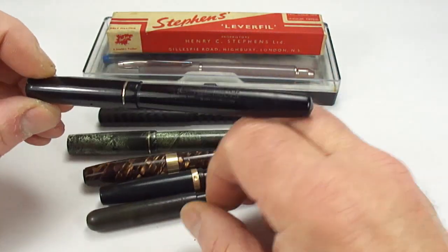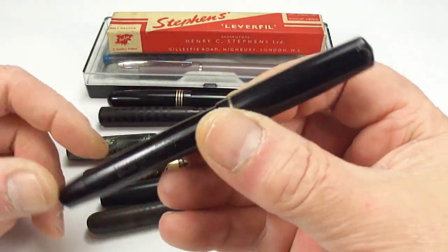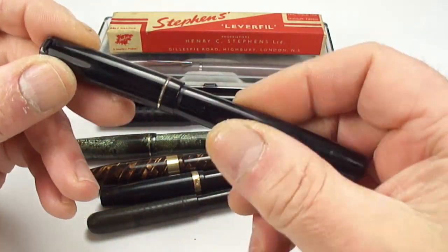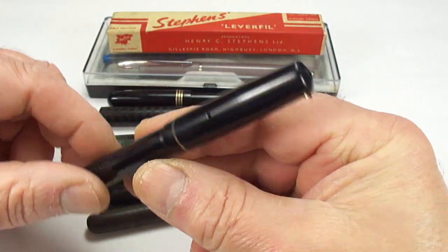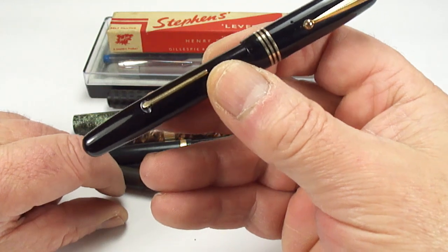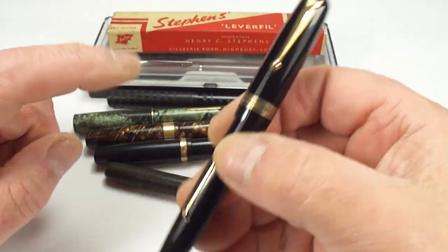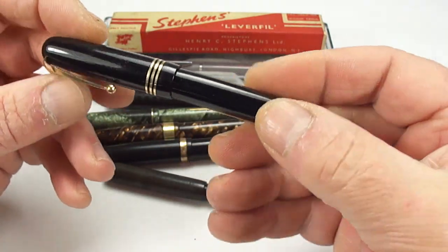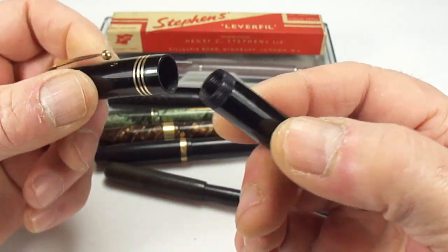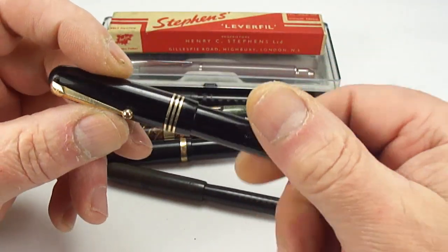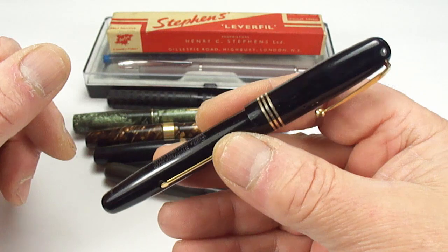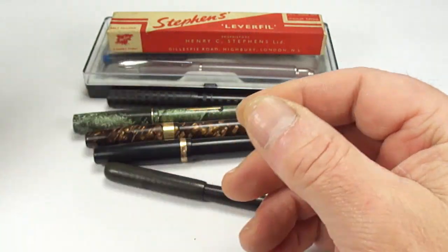We've also got a Swan self filler - again you can see the clip's broken off, so we need a new cap for that as well. If anyone's got a cap for that, please let me know. We've got a lovely black Swan, I think this is a 3260. You can see the clip is there, everything's there, except it's got no section. I may have a nib for this pen, but if anybody's got a section for this pen, a 3260, please let me know.